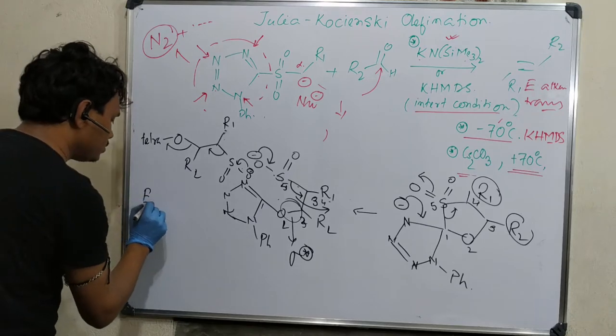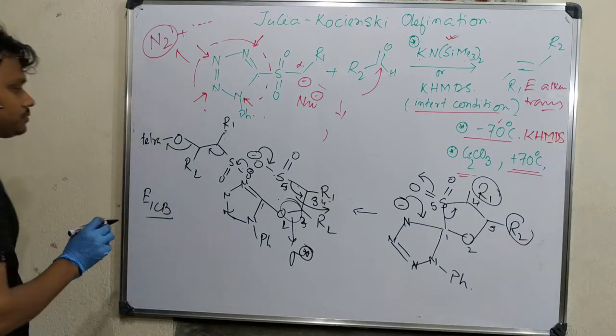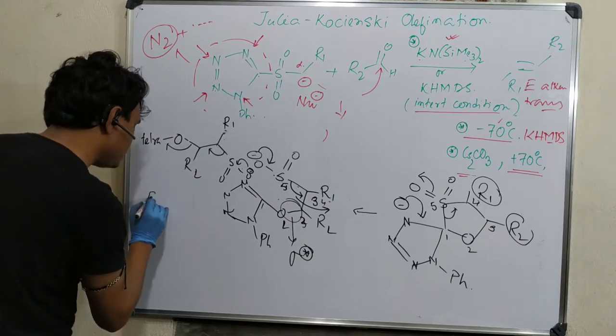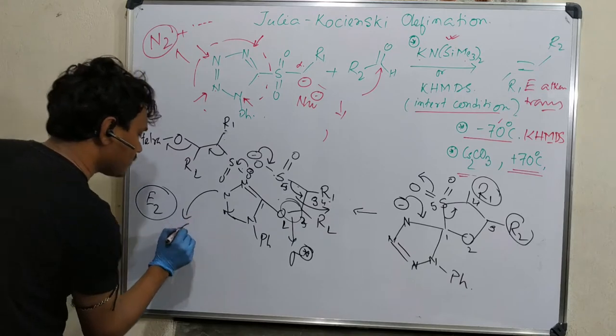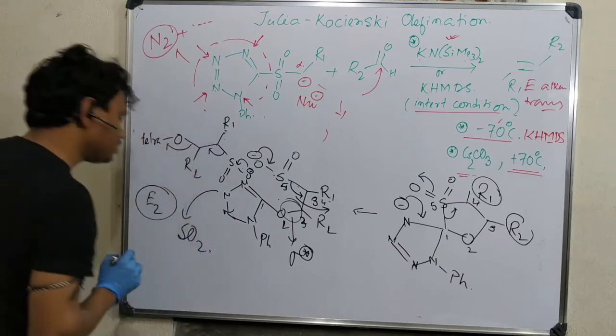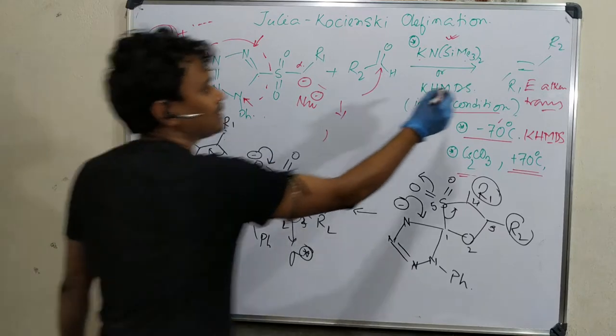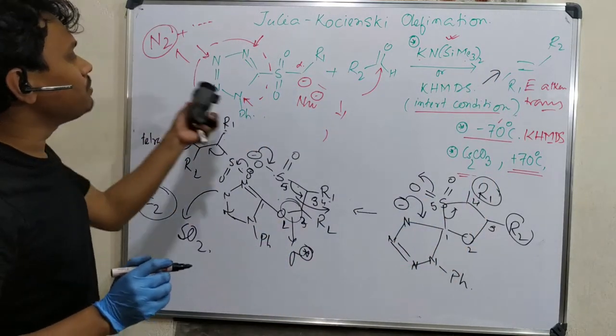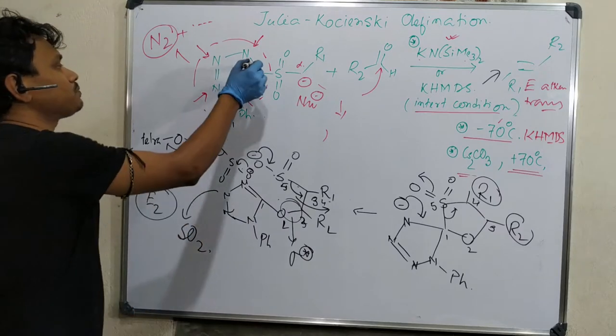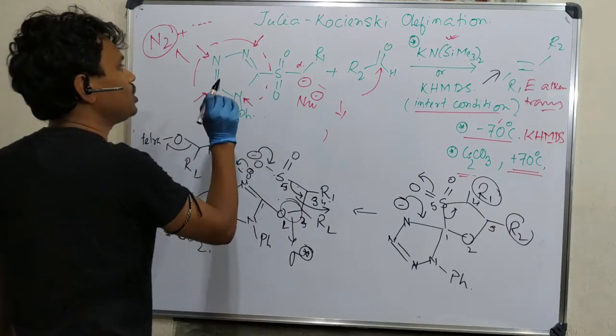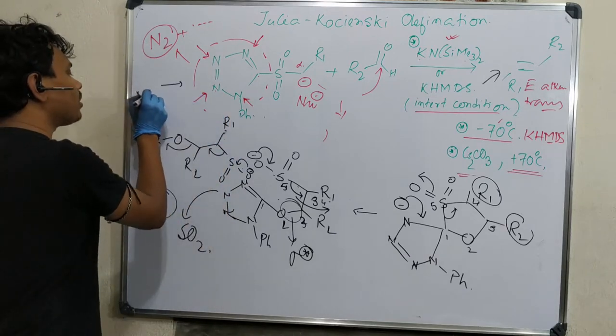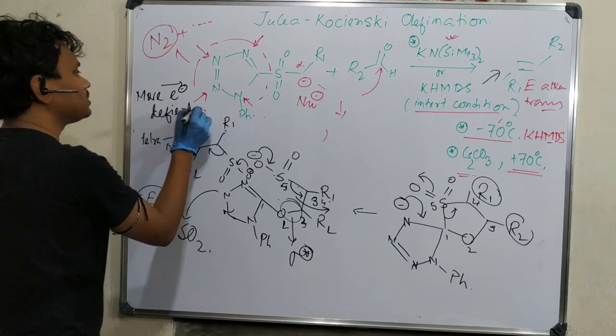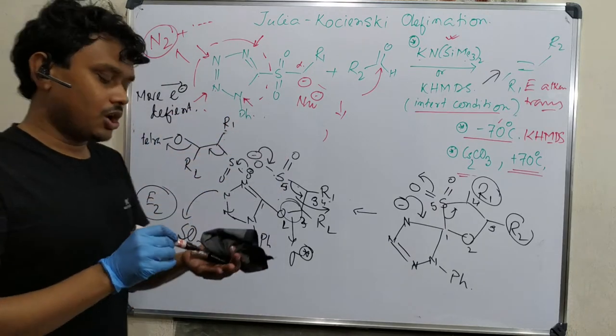This bond sigma star. In this way, an E2-type path will be followed under the same conditions. Sulfur dioxide will come out and it will produce the corresponding trans alkene as a product. This is the whole mechanistic description. The main difference is the use of a tetrazole which is relatively more electron deficient. This is another modification of the Julia reaction.